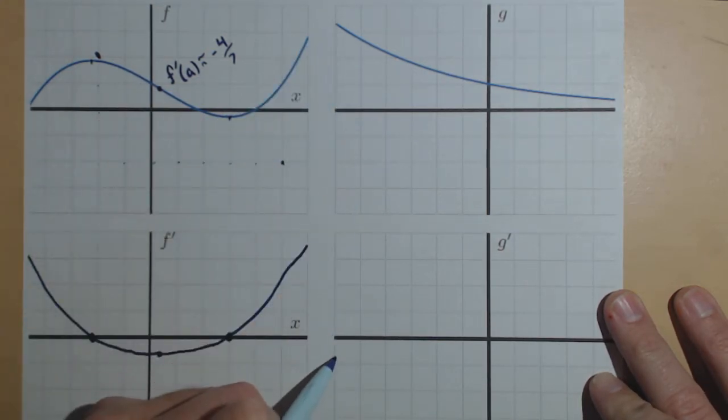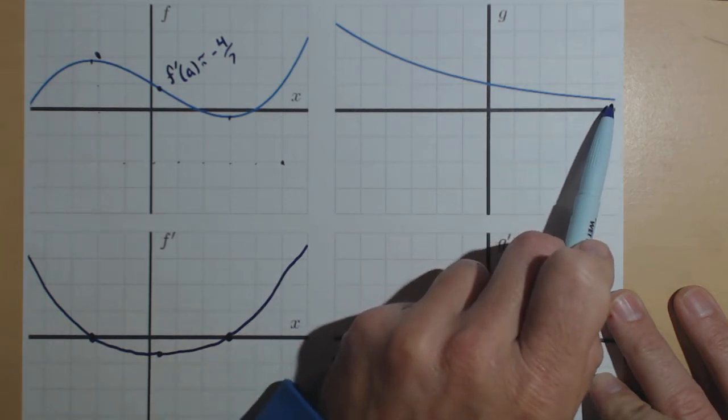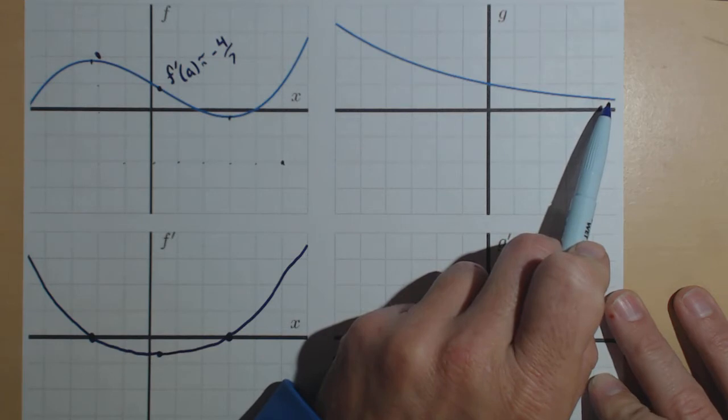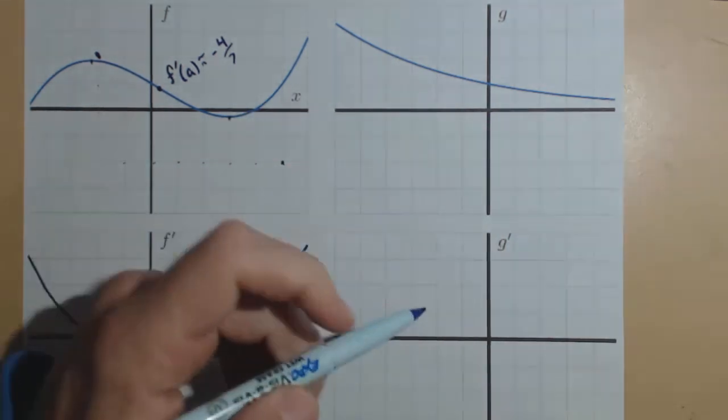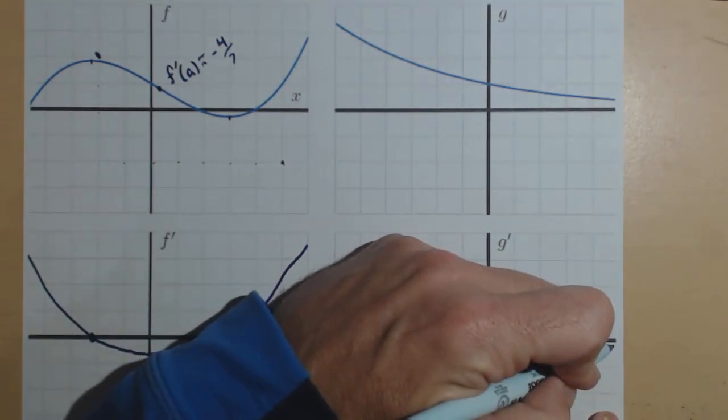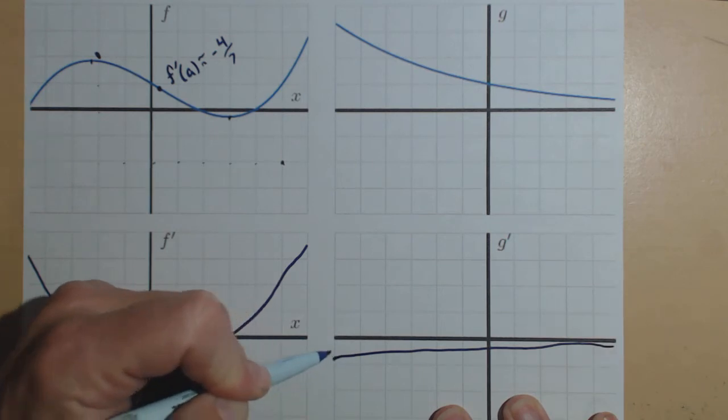So, I'm going to say that maybe about right here. And now, what's going to happen is, now the slope is going to get closer and closer to zero, but never quite touch zero, and it's going to continuously make that pattern. So, I'm going to have a graph that's going to do something like this.